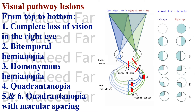Lesion 3 is a lesion in the optic tract, affecting the ipsilateral temporal fibers and the contralateral nasal fibers. In the right eye, affection of the ipsilateral temporal retina results in blindness of the medial field, and in the other eye, blindness of the lateral field. This is called homonymous hemianopia — blindness in the same direction.